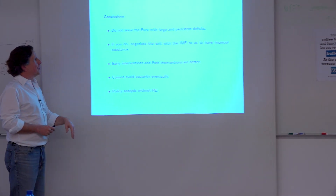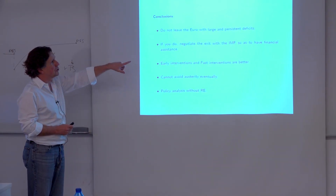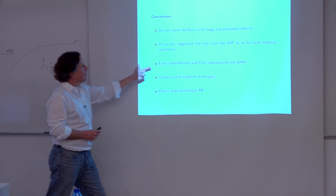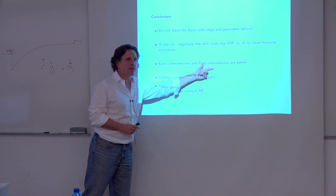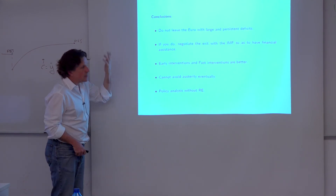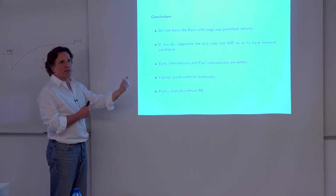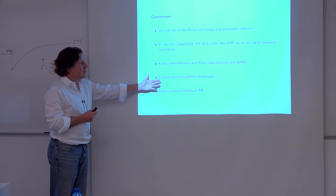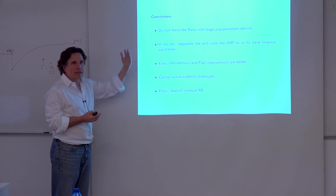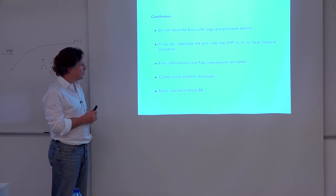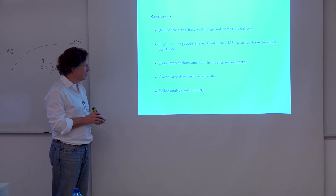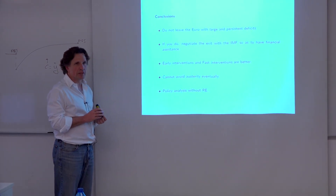Do not leave the euro with large and persistent deficits. If you do, negotiate the exit with the IMF so you have financial assistance. Early and fast interventions are better — they are not necessarily more expensive fiscally, except that fast interventions require a little bit more upfront, but you can give it back within a year. You cannot avoid austerity eventually: if you're going to get off this vicious cycle of high inflation, hyperinflation, and IMF bailouts, you have to adjust the deficit. This is a cool example of how to do policy analysis within the wilderness.